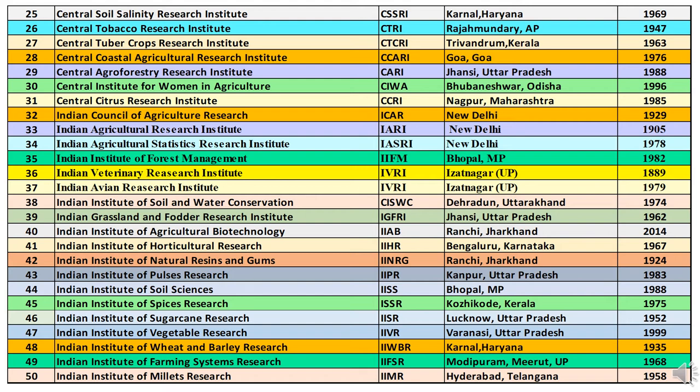Thirty-eighth is IISWC — Indian Institute of Soil and Water Conservation — headquartered at Dehradun, Uttarakhand, established in 1974. Thirty-ninth is IGFRI — Indian Grassland and Fodder Research Institute — headquartered at Jhansi, Uttar Pradesh, established in 1962. Fortieth is IIAB — Indian Institute of Agricultural Biotechnology — headquartered at Ranchi, Jharkhand, established in 2014. Forty-first is IIHR — Indian Institute of Horticultural Research — headquartered at Bengaluru, Karnataka, started in 1967.